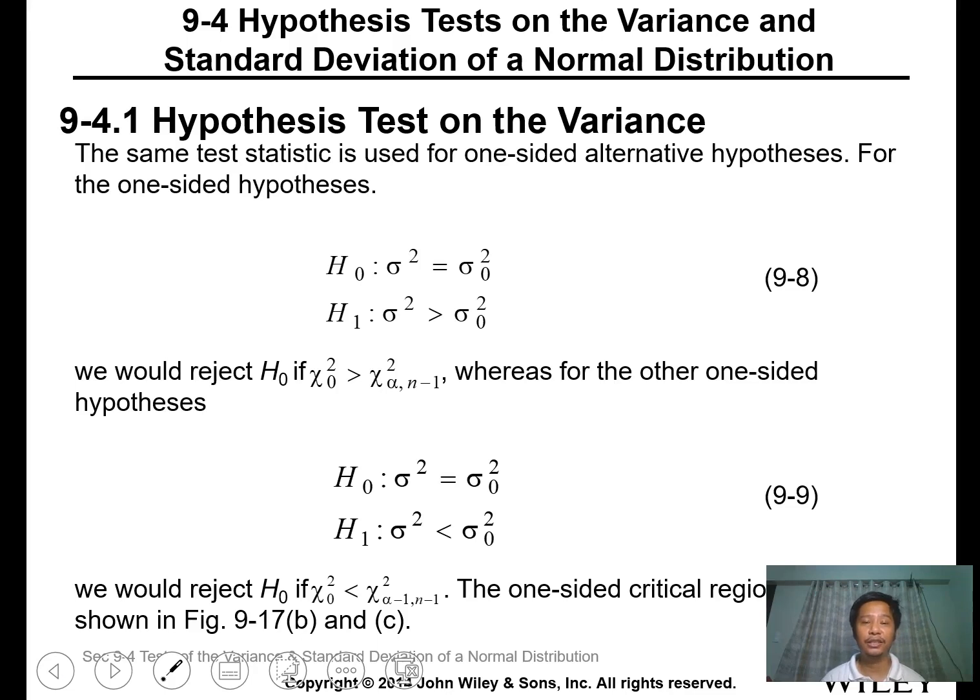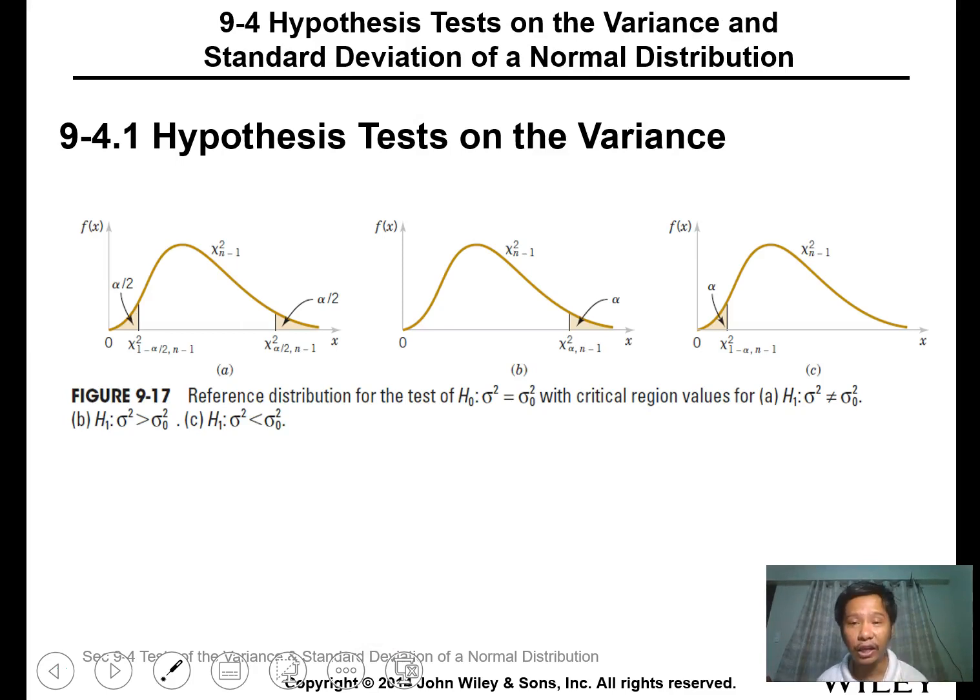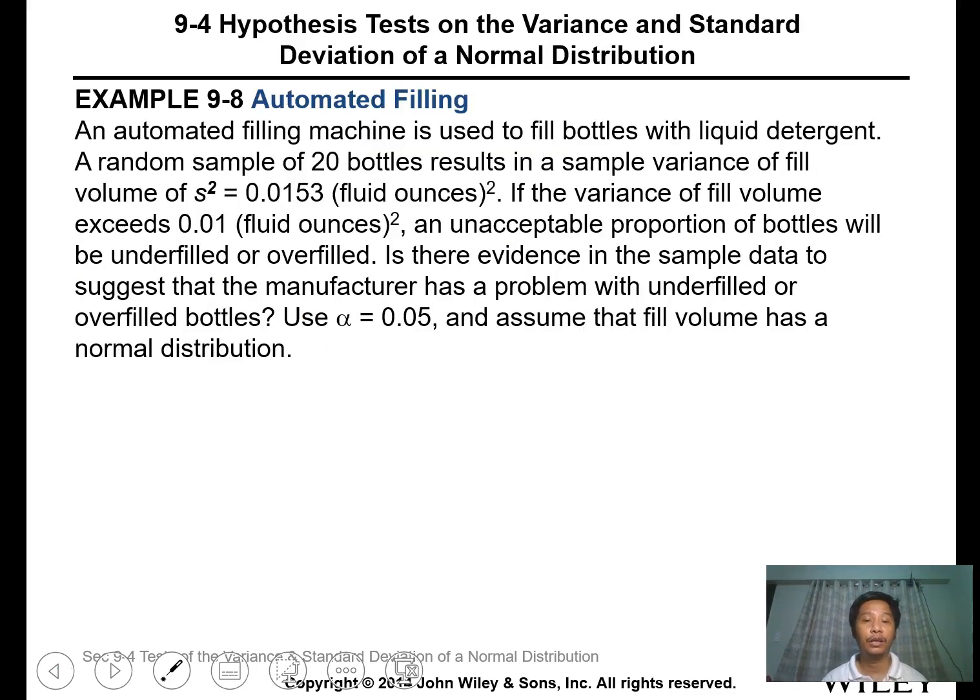For a single or one-sided alternative test on variance, it's almost the same: greater than or less than. The difference is in the alpha values. This is alpha, this is 1 minus alpha. Take note for chi-square test, this is the alpha value we use. For a two-sided test, you need both critical values.